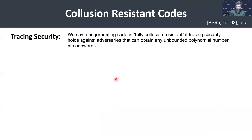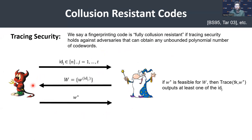We say a fingerprinting code is fully collusion-resistant if tracing security holds against adversaries that can obtain any unbounded polynomial number of codewords, with adaptive queries. The adversary makes identity queries, the challenger responds with corresponding codewords — this constitutes the set W of codewords obtained by the adversary. Finally, the adversary outputs a word W*. The security requirement is: if W* is feasible for the set W acquired through its queries, then the tracing algorithm should output at least one of the queried identities.